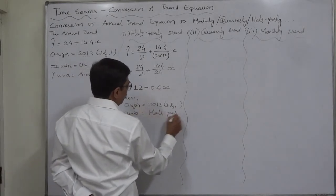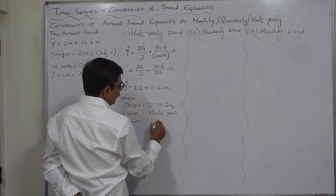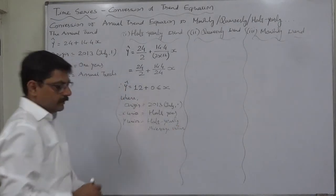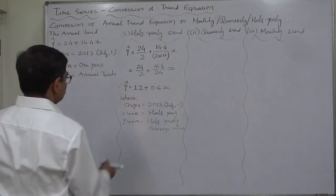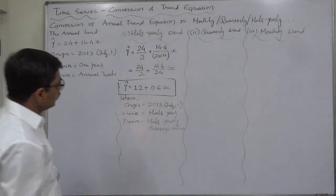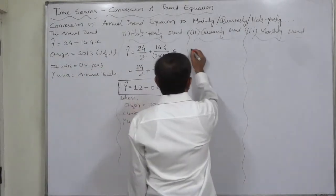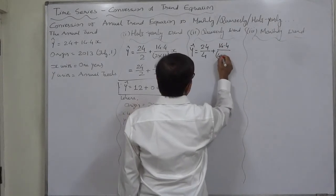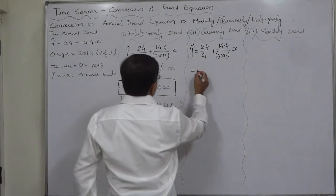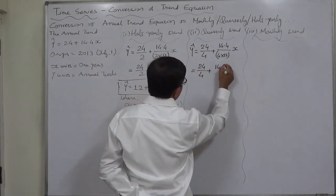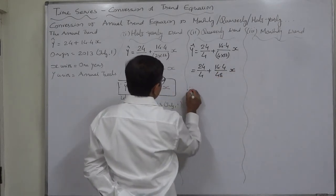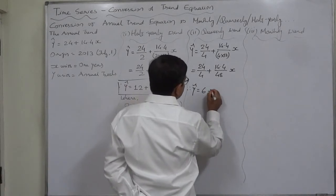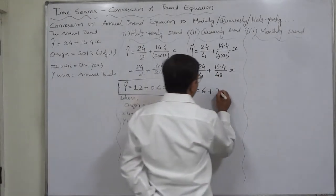The y units are half-yearly average values. Now for quarterly conversion: a year is made up of four quarters, so it will be 24 divided by 4 plus 14.4 divided by 4 into 1/2 into x. That gives 24/4 plus 14.4/48 x. Therefore, the estimated value of y for a quarterly trend is 6 plus 0.3x.